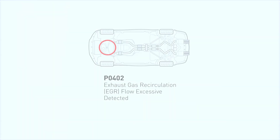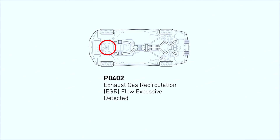The presence of code P0402 on a diagnostic scan of your vehicle indicates to a technician that there is something wrong with the exhaust gas recirculation EGR system. The EGR system helps your engine to run efficiently, consume less fuel, and emit fewer emissions.